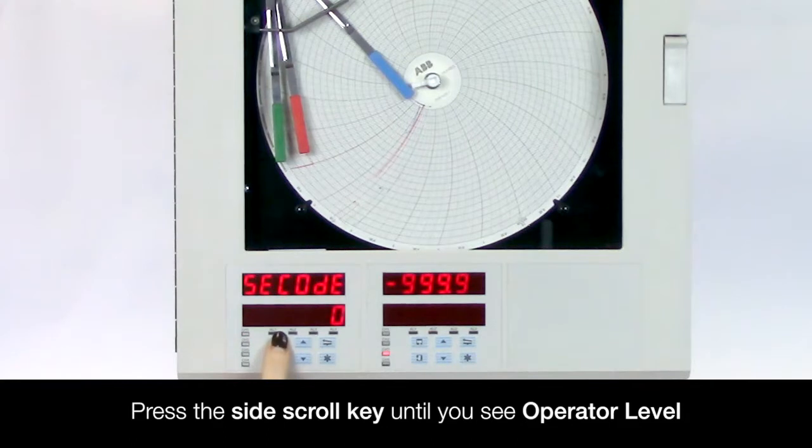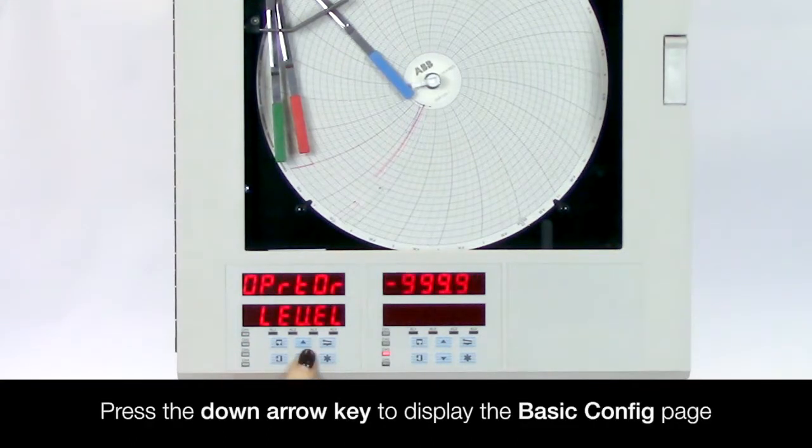Press the side scroll key until you see the operator level displayed. Then press the down arrow key to display the basic config page.